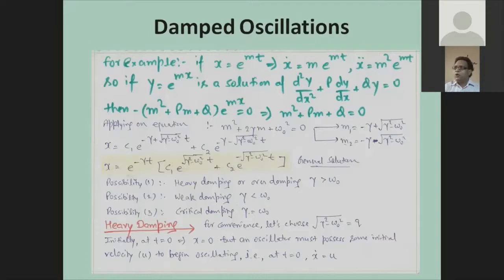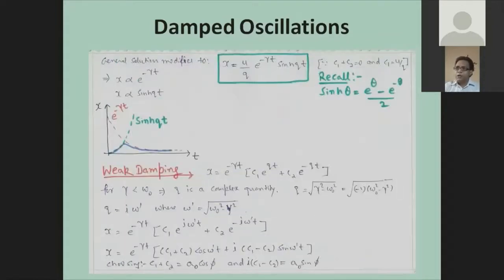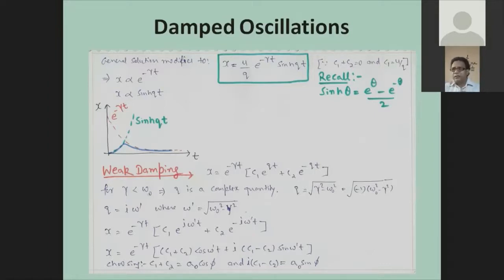In real life, heavy damping means whenever the damping is so effective that it is difficult to record the natural frequency of oscillation — the oscillation has to die out very soon. What is happening is that the relaxation time, within which the oscillation has to come to rest, will keep decreasing, and the frequency will also keep reducing.